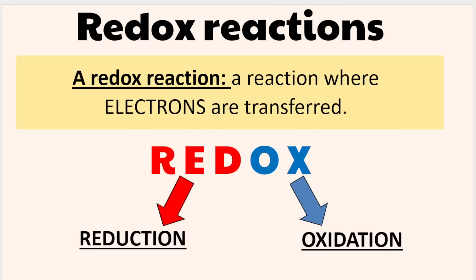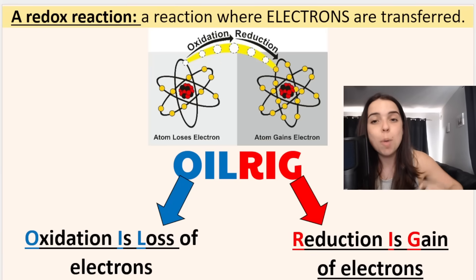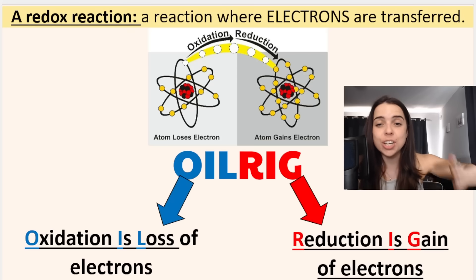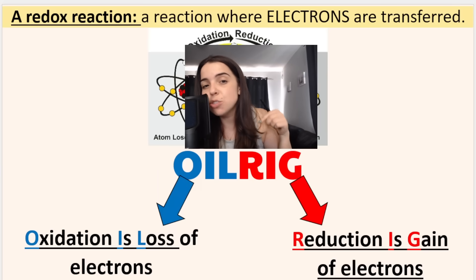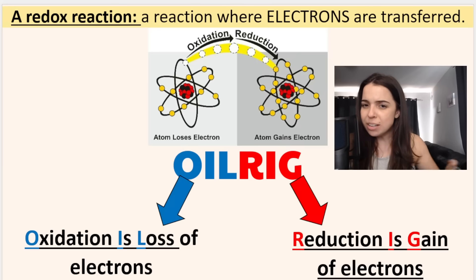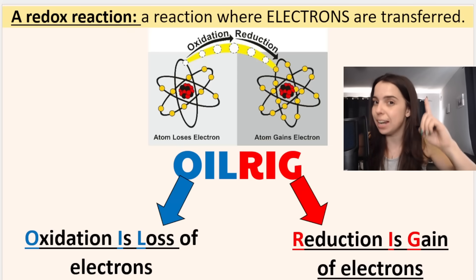These two words are super important. If I say that reduction has occurred, or something has been reduced, what that means is that thing has gained or accepted electrons. If I say oxidation has occurred, or something has been oxidized, it means that substance has lost electrons. One way to remember this is the mnemonic OIL RIG: OIL means oxidation is loss — loss of electrons — and RIG means reduction is gain — gain of electrons.